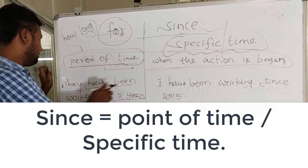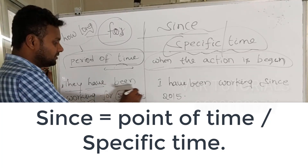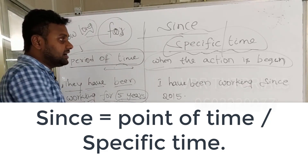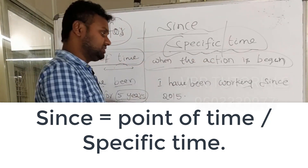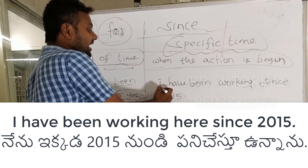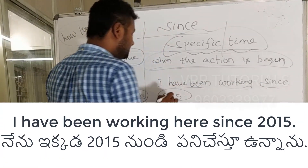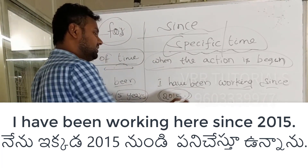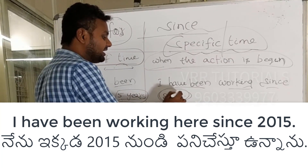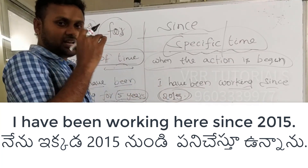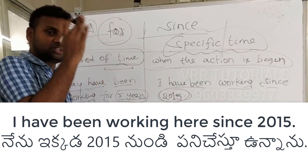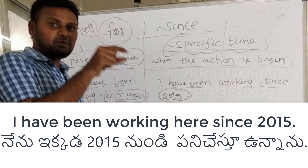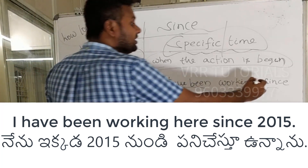For example: I have been working since 2015. Here, 2015 is a particular date — your starting year is mentioned. When you mention a specific starting time, you use 'since'.